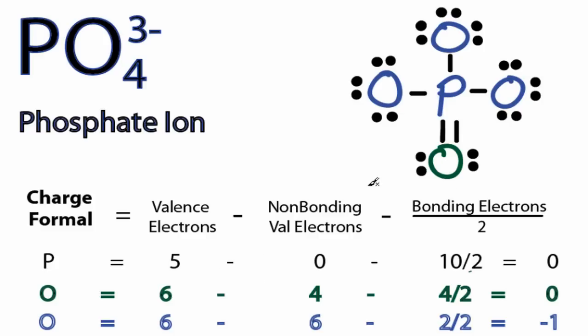And this Oxygen right here, 6 minus the 4 non-bonding, and then the 4 bonding divided by 2, that's 0. And the other Oxygens remain at a minus 1.